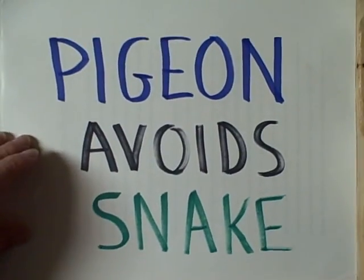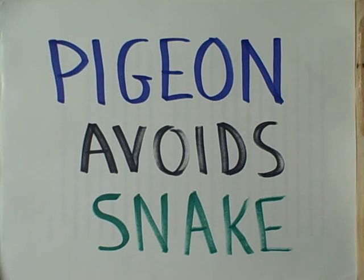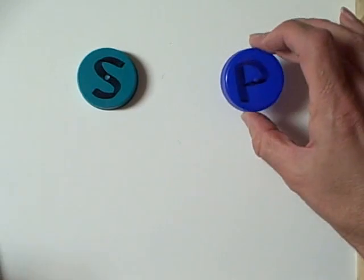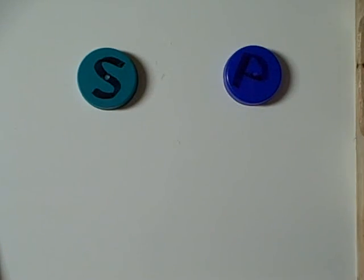But that pigeon also seeks to avoid the snake. He's afraid of being eaten by the snake. So whatever direction the snake moves in, the pigeon will go in the opposite direction. Here's the snake. Here's the pigeon.